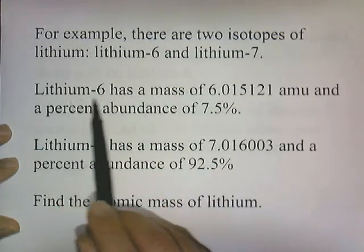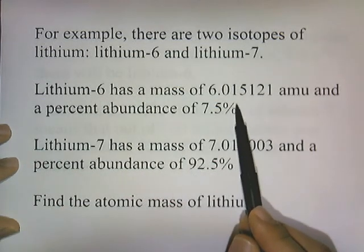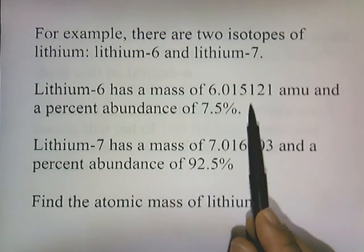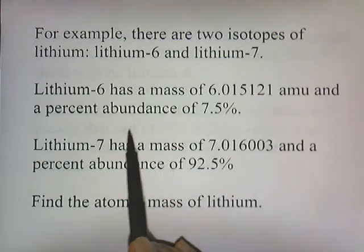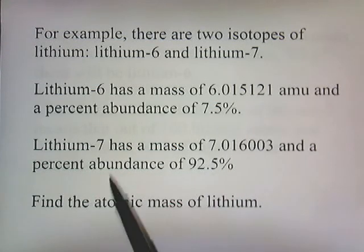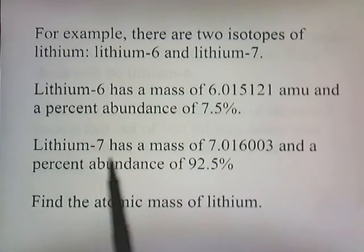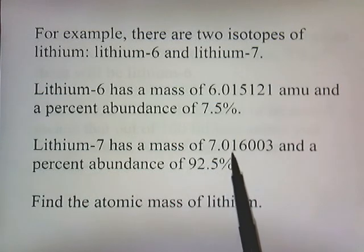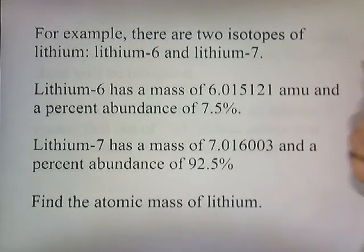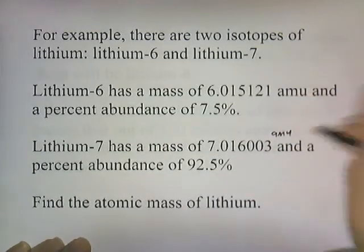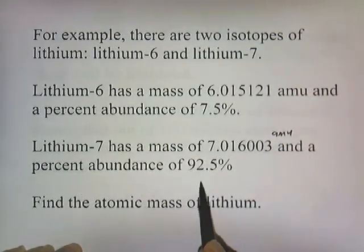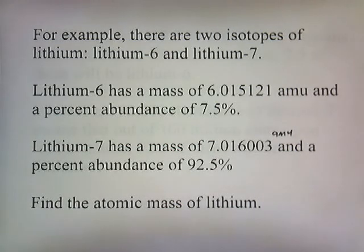Now lithium-6 has a mass of 6.015121 atomic mass units and a percent abundance of 7.5%. And the isotope lithium-7 has a mass of 7.016003 atomic mass units and a percent abundance of 92.5%.